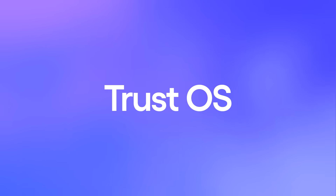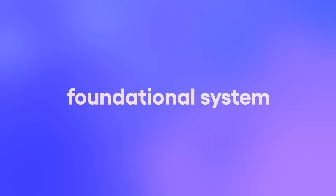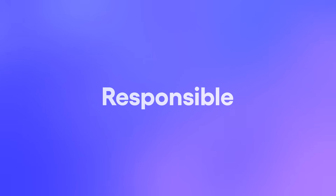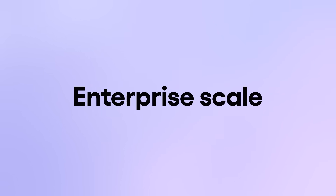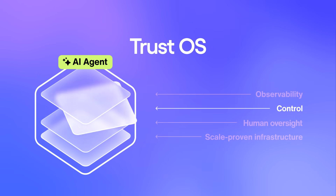Today, I'm excited to show you the Sember Trust OS — the industry's first foundational system built to make AI agents accountable, responsible, and ready for enterprise scale, giving you the same trust infrastructure you'd expect from any mission-critical system. It's built on four core pillars: observability, control, oversight, and scale-proven infrastructure.